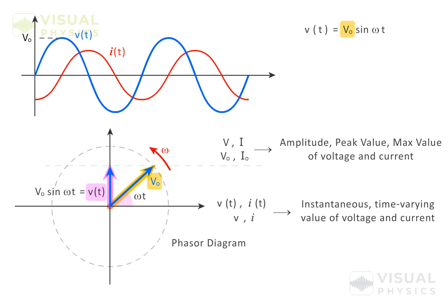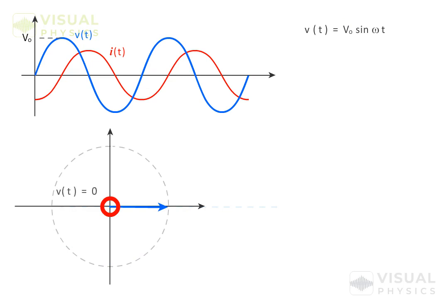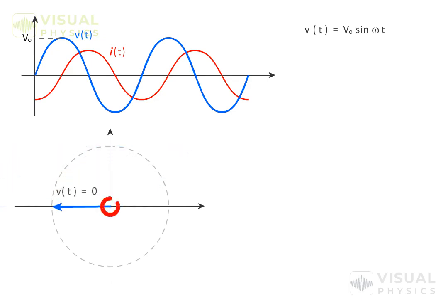That is, it gives the equation of time-varying voltage. At some point, the instantaneous voltage of the source is zero. Then it reaches a maximum value with polarity in one direction, decreases back to zero, and then reaches a maximum value with reverse polarity, and so on.